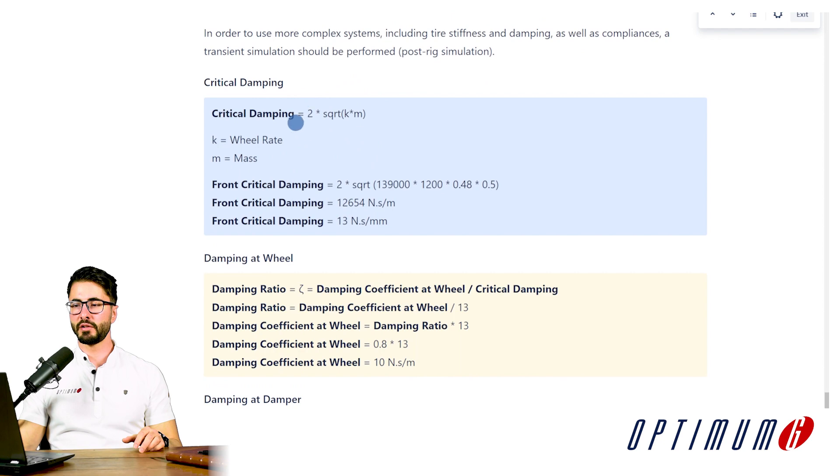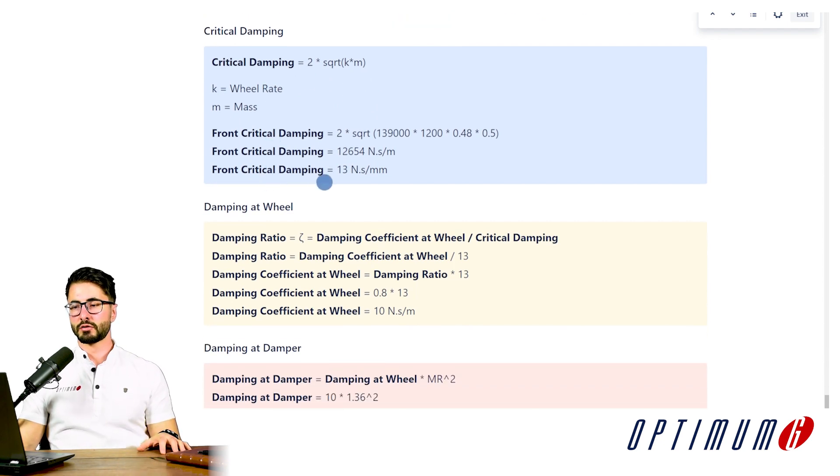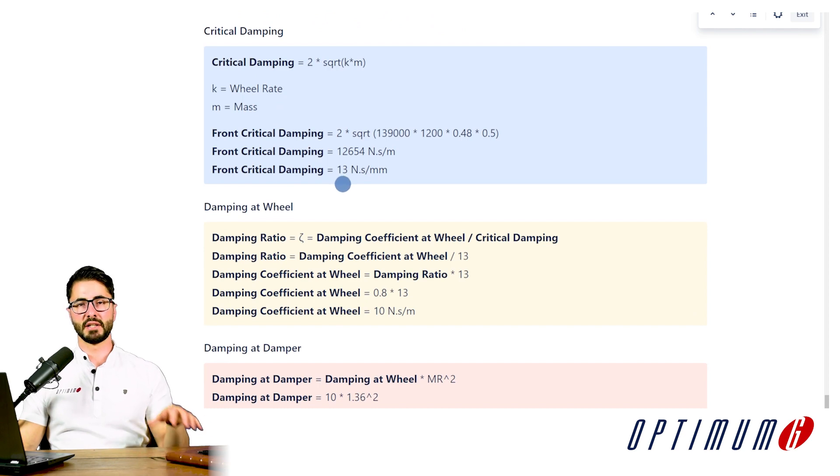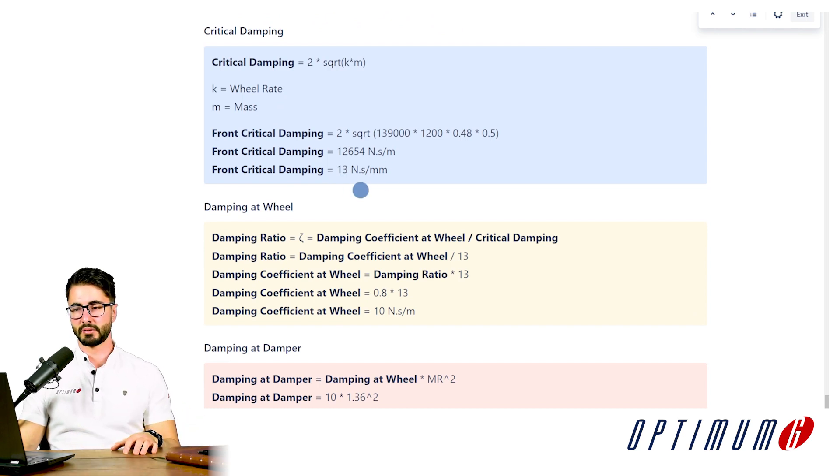So first we calculate critical damping. I already gave you the equation we just apply the stiffness and mass of the system in order to come up with this number. So we have a critical damping ratio of 13 newton second per millimeter.